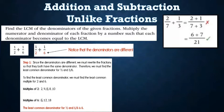Now, 6 divided by 2 is 3, so 1/2 becomes (1×3)/(2×3) = 3/6. And 1/6 will not change, since its denominator is already equal to the LCM. So it becomes 3/6 + 1/6 = (3+1)/6 = 4/6. Therefore, 1/2 + 1/6 = 4/6.